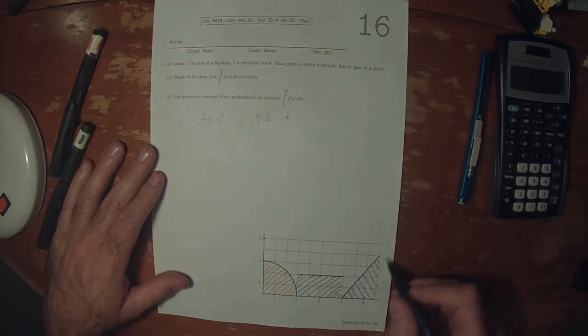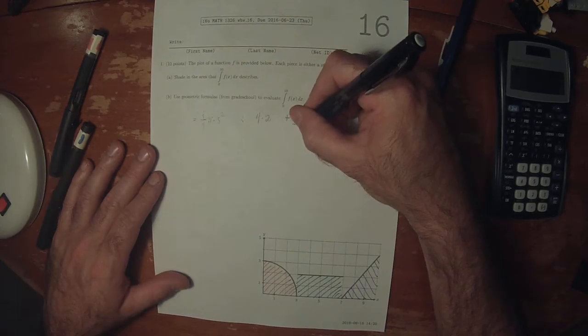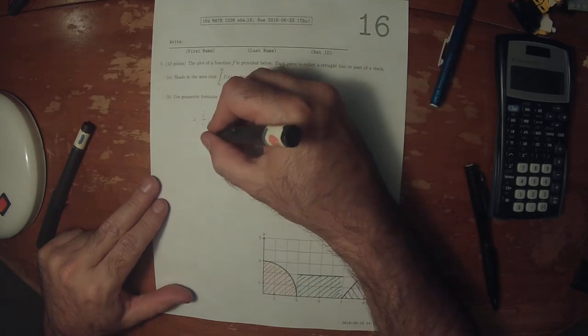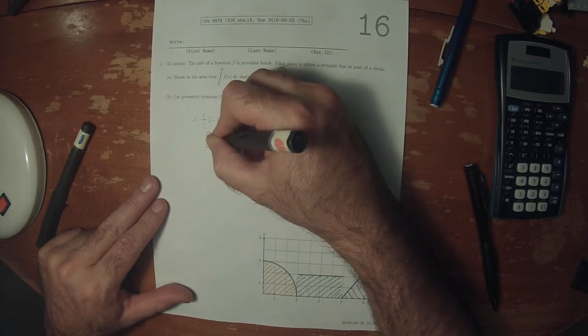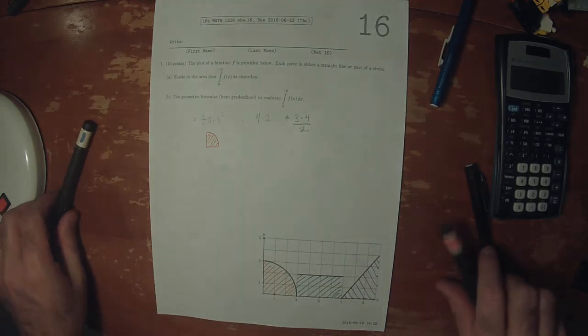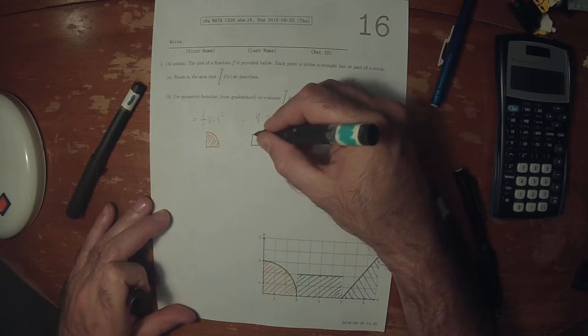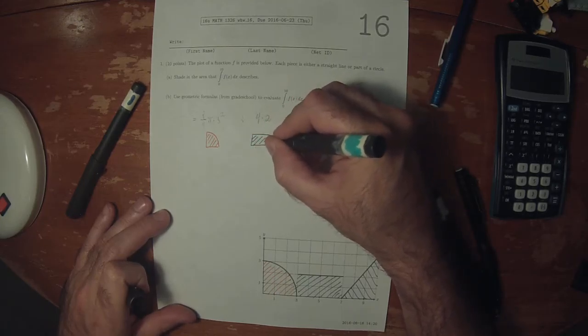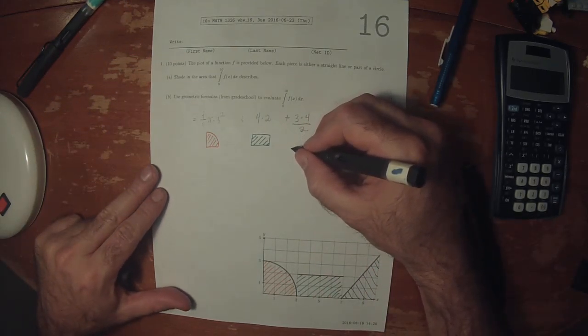And then plus the area of this triangle. That would be base, which is three times height, which is four. And then over two. So that's this part of the circle, plus this rectangle, plus this triangle.